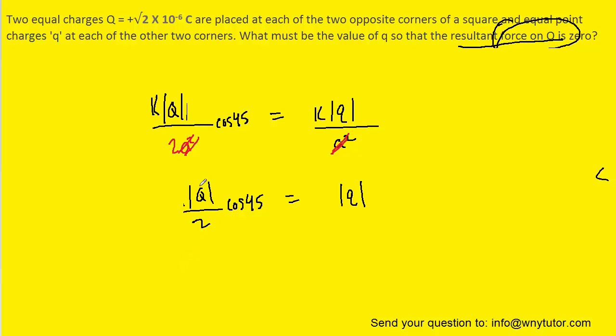Now, the value of uppercase Q was given to us as the square root of two times ten to the minus six Coulombs. This is all divided by two. The cosine of 45 is radical two over two.